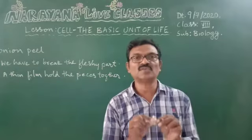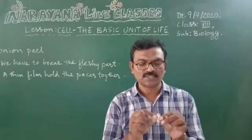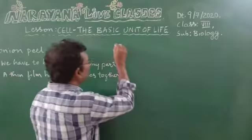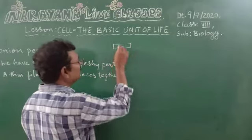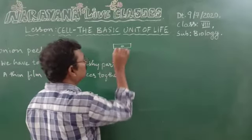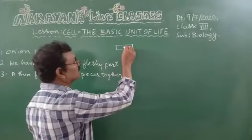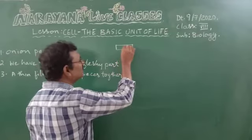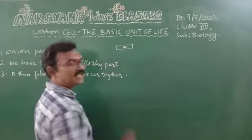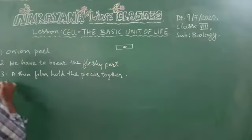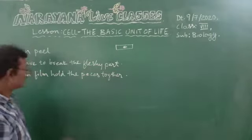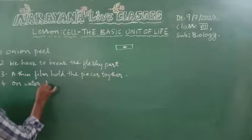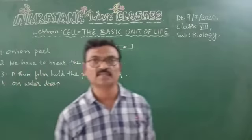Fourth question: on which substance is the thin film of onion spread on the slide? We take out this thin film. On the slide, there is already a water drop. We have to place the thin film of onion on that water drop on the slide.